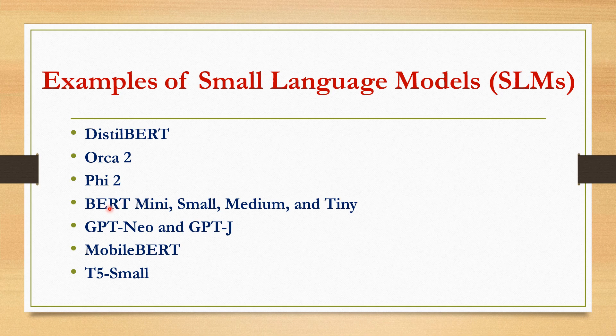Next are BERT Mini, Small, Medium, and Tiny. Google's BERT model is available in scaled-down versions ranging from Mini with 4.4 million parameters to Medium with 41 million parameters, to accommodate various research constraints. Next are GPT-Neo and GPT-J, which are scaled-down iterations of OpenAI's GPT models, offering versatility in applications and key scenarios with more limited resources.